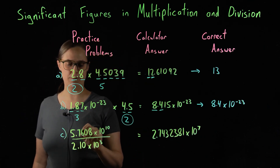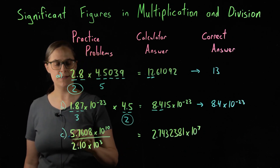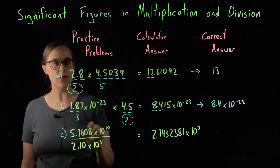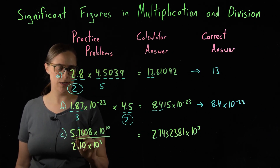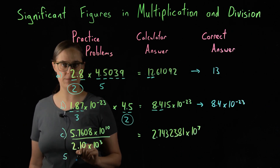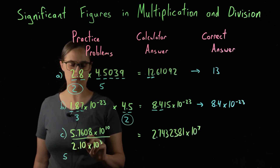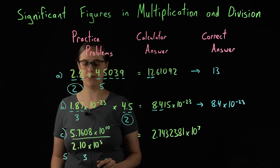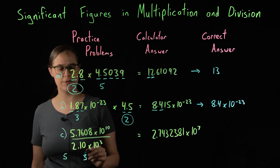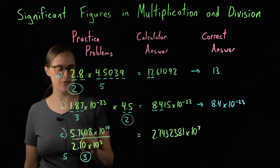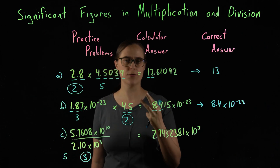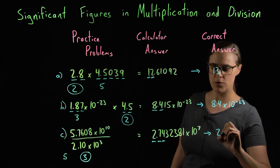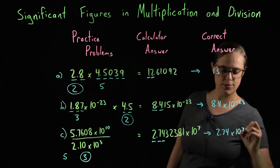Problem C: 5.7608 × 10¹⁰ divided by 2.10 × 10³. For 5.7608, all digits are significant — counting 1, 2, 3, 4, 5 — five significant figures. The denominator's coefficient is 2.10, and digits in the coefficient are always significant: 1, 2, 3 — three significant figures. Our two numbers have five and three significant figures; the lower is three. Our answer needs three significant figures, so the proper answer is 2.74 × 10⁷.